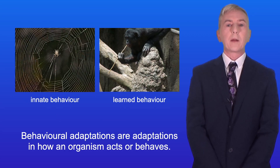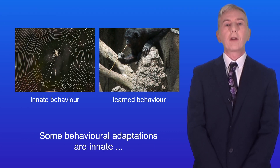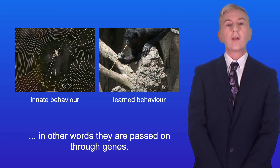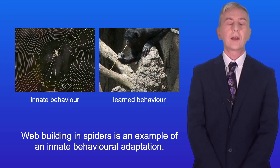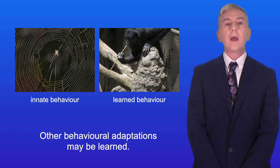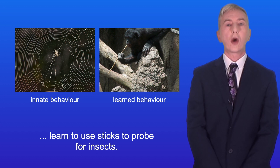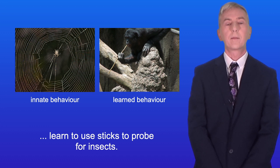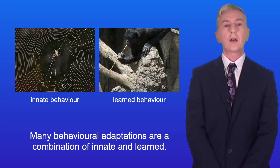Behavioural adaptations are adaptations in how an organism acts or behaves. Some behavioural adaptations are innate — in other words, they're passed on through genes. Web building in spiders is an example of an innate behavioural adaptation. Other behavioural adaptations may be learned. For example, some species of primates learn to use sticks to probe for insects. And many behavioural adaptations are a combination of innate and learned.